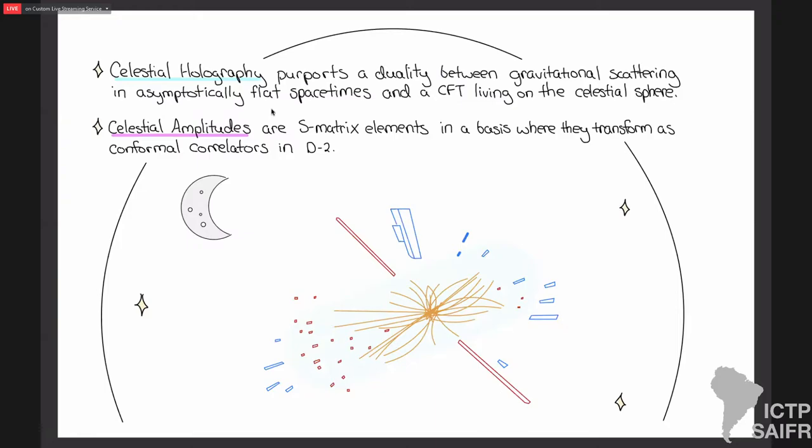Celestial holography is purporting a duality between gravitational scattering in asymptotically flat spacetimes and a CFT living on the celestial sphere. If you look up at the night sky, there's, for d equals 4, a 2D celestial sphere, where we're trying to find a dictionary between S-matrix elements and correlators there. Celestial amplitudes are the central object of that — they're S-matrix elements in a basis for the scattering states such that they're guaranteed to transform as conformal correlators in co-dimension two. For this talk I'm looking at 4D with a 2D celestial sphere.